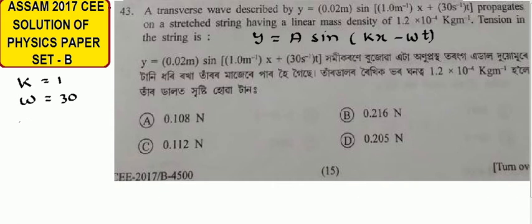k and omega: k equals 2 pi by lambda and omega equals 2 pi by T.